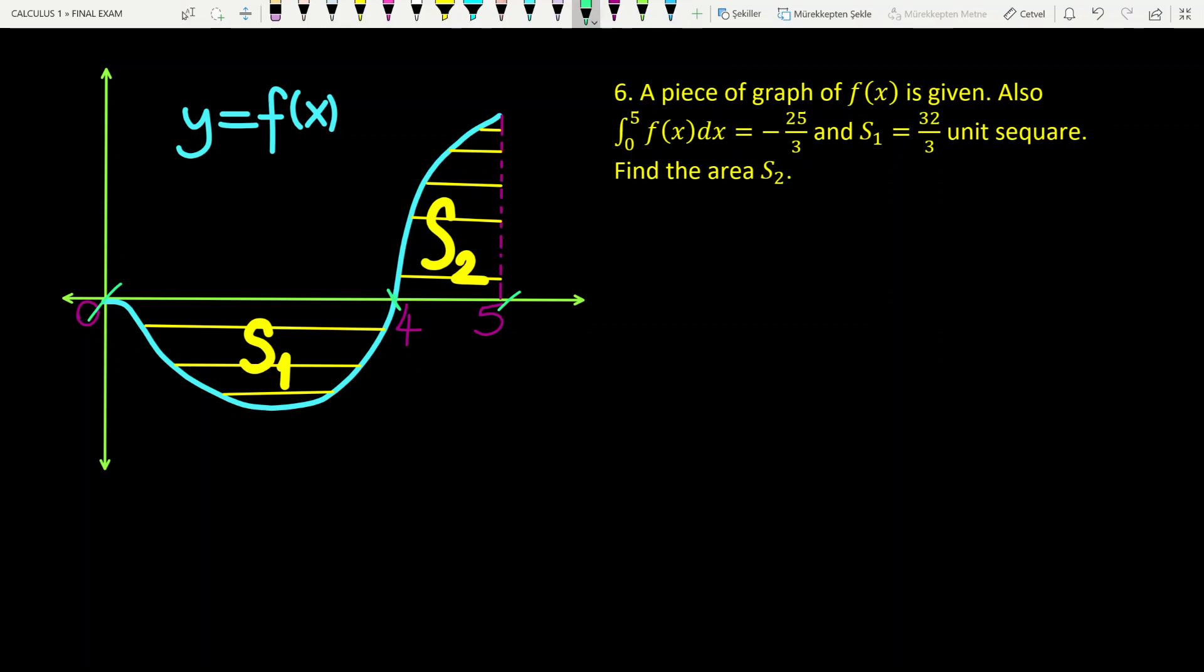In question 6, a piece of graph of f(x) is given. Also, the integral of f(x) from 0 to 5 equals -25/3, and area S1 is given as 32/3 square units.